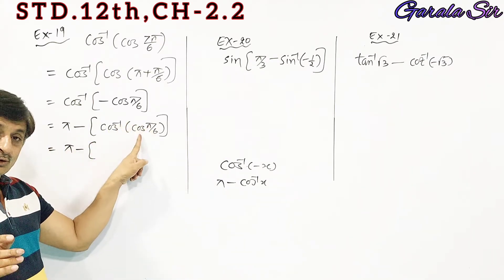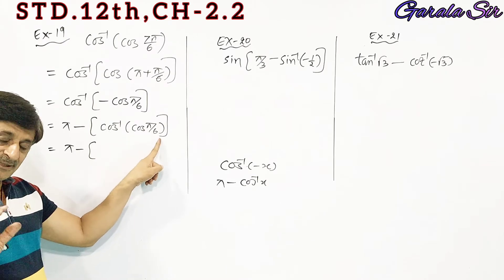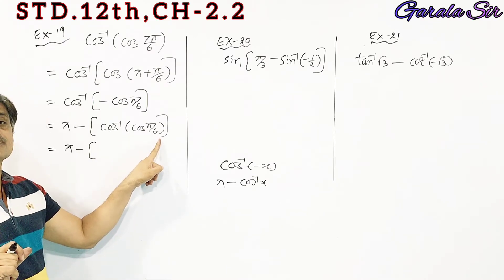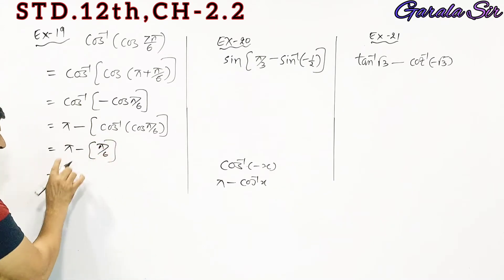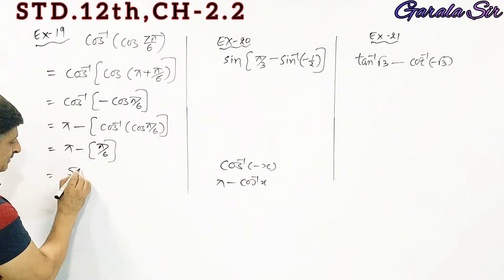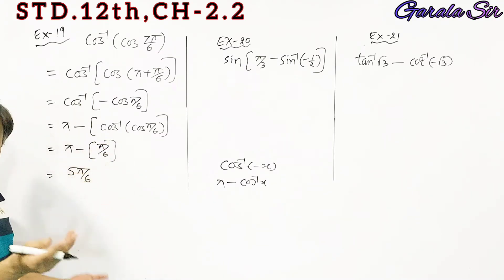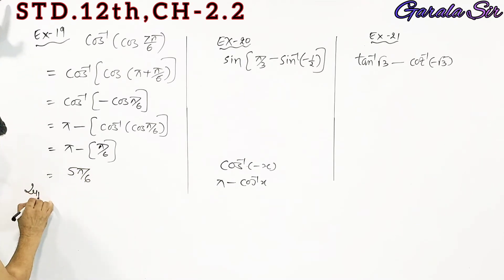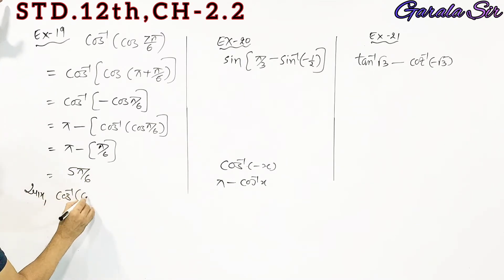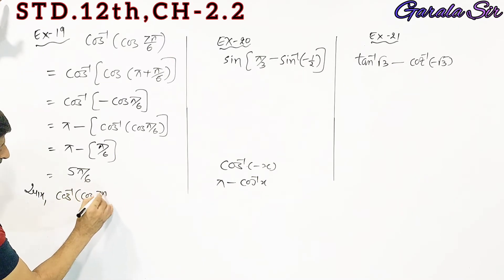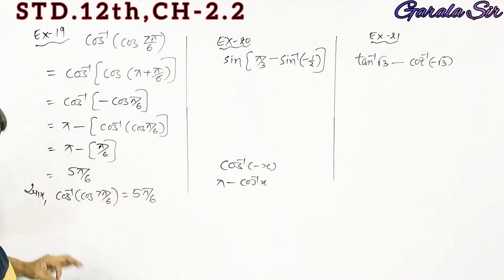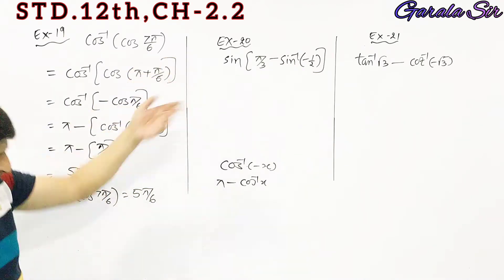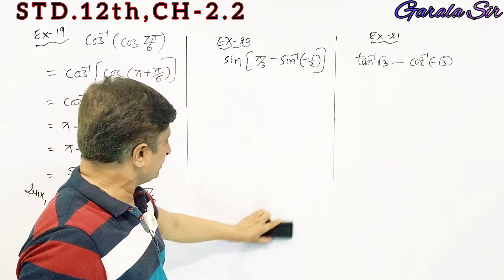Pi by 6, so we are going to get pi minus pi by 6, which gives 5π/6. Clear? Next: cos inverse cos(7π/6), answer is 5π/6.